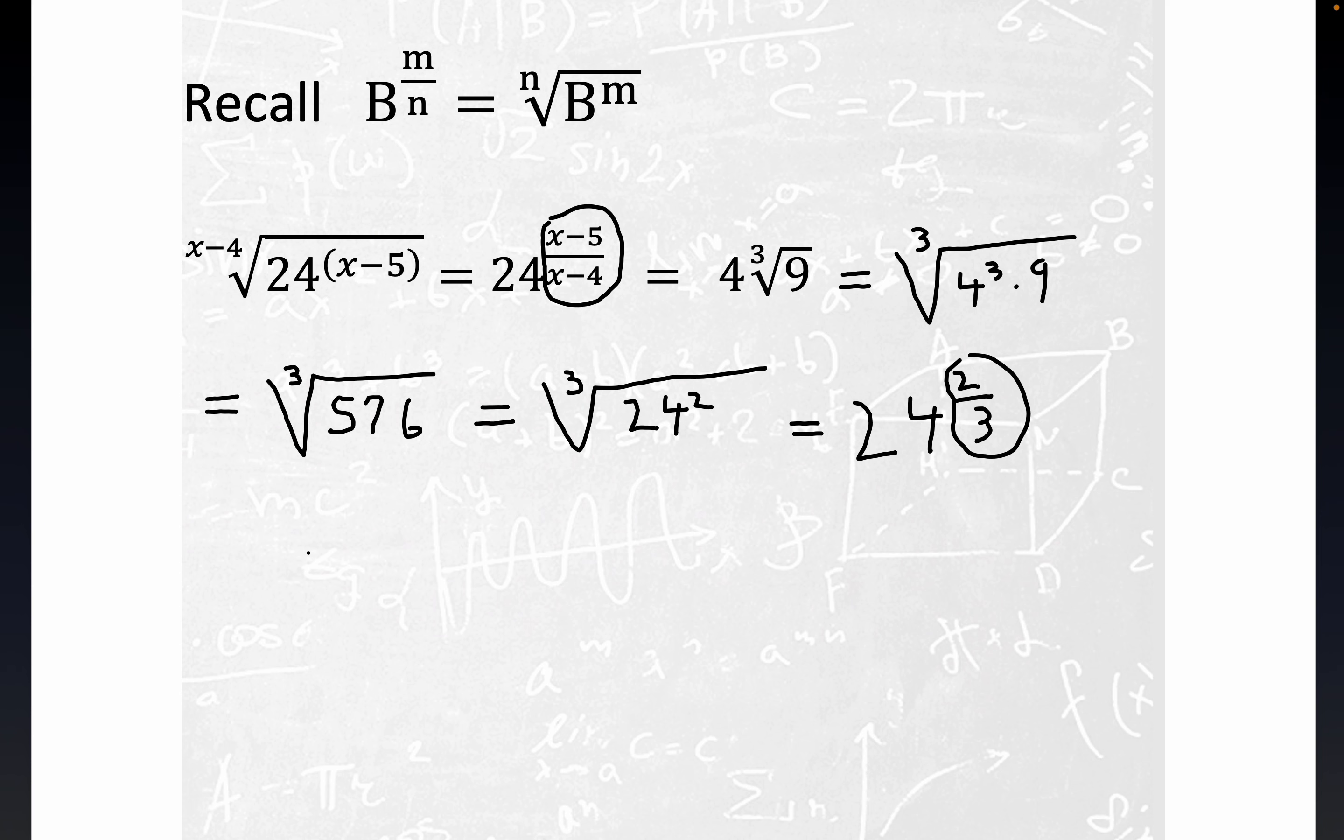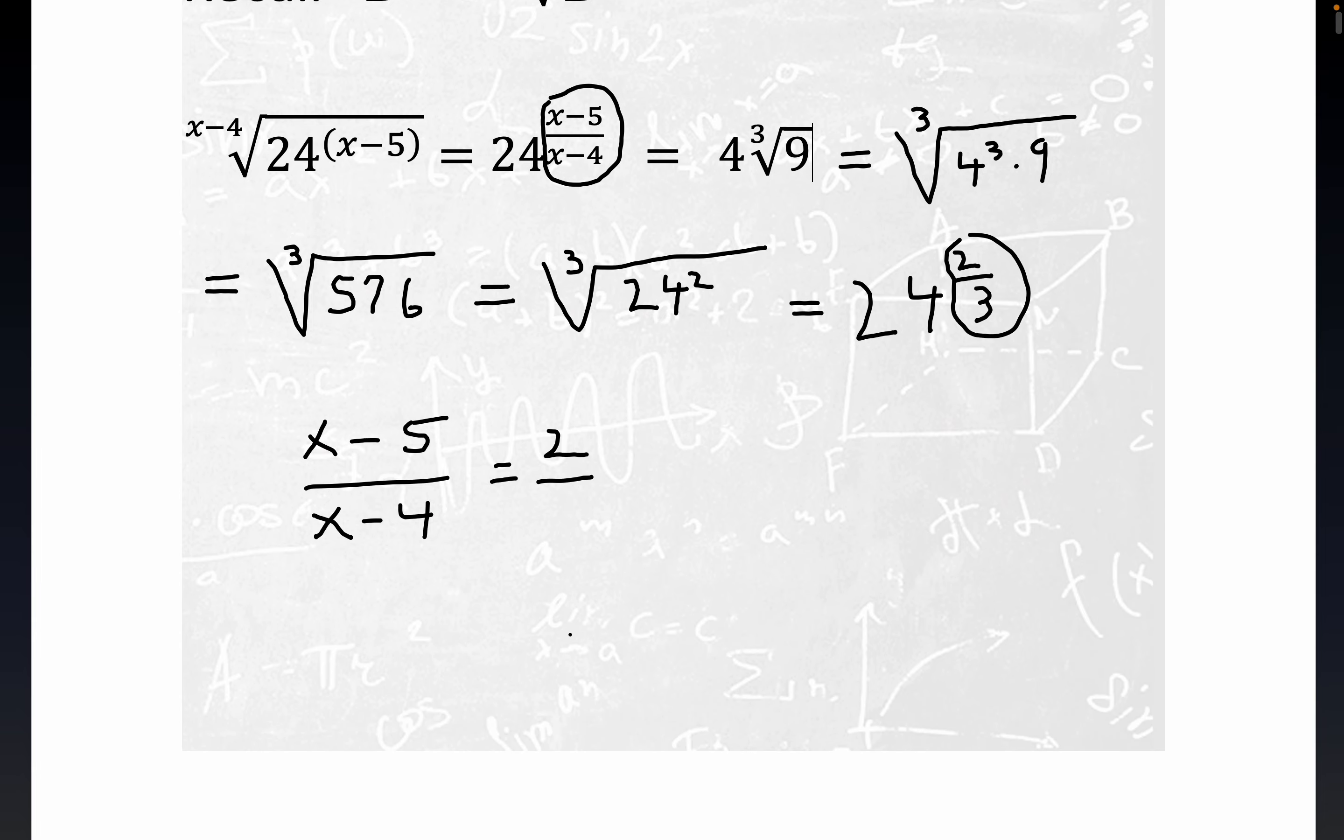That ends up being x minus five over x minus four equals two-thirds. And of course when two fractions are equal to each other, you can cross multiply. That's just a property of arithmetic. So this is equal to two-thirds, and so folks this happens only if you cross multiply.